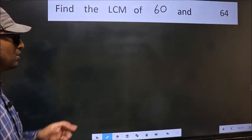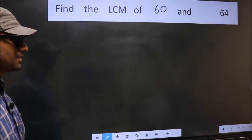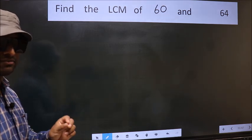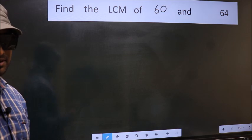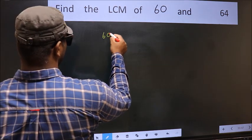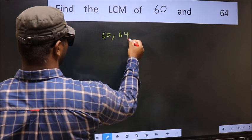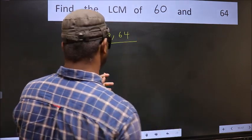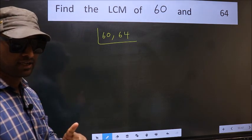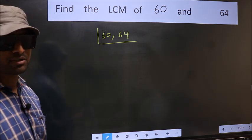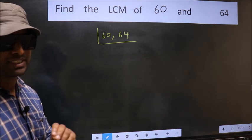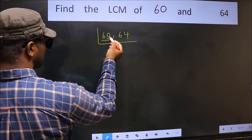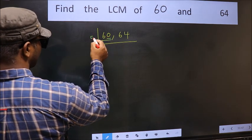Find the LCM of 60 and 64. To find the LCM, first we should frame it in this way: 60 and 64. This is your step 1. Now you should focus on the first number, which is 60 here. For this number, the last digit is 0, so directly take 5.